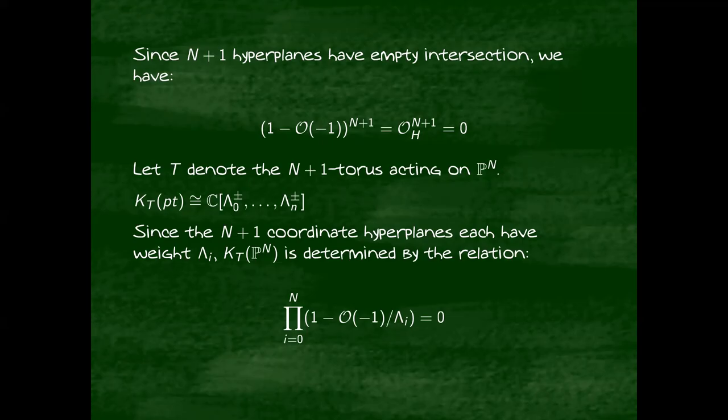There's a theorem of Serre that says if you take the derived tensor product of structure sheaves, that's equivalent to intersections. So you can use this to argue that (1 - O(-1))^{n+1} is equal to 0, because the intersection of n+1 hyperplanes is empty. In fact, this relation is enough to completely describe the K-ring of projective space.